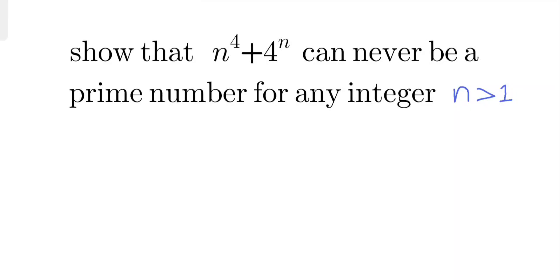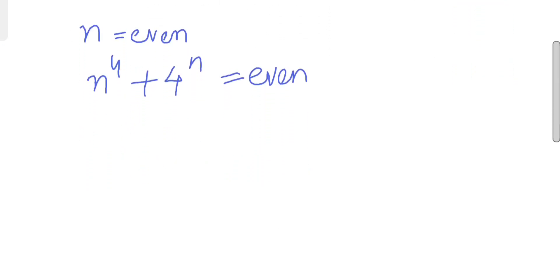Let's check: if n is even, then this expression n to the power 4 plus 4 to the power n is also even, hence obviously it's not a prime number because one of the factors is 2.